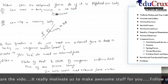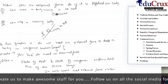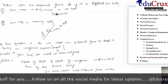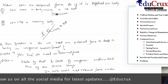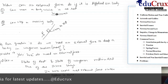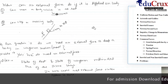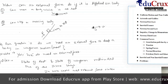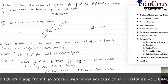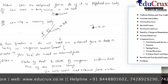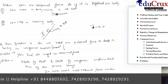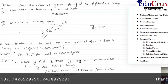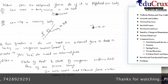Our first question is: do we need an external force to keep a body in uniform motion? Uniform motion is motion in which velocity is constant for the overall period of the motion. To keep a ball in uniform motion, do I need to apply an external force on it? Aristotle thought yes, we do need an external force to keep a body in uniform motion. But his point of view was rejected by Galileo.